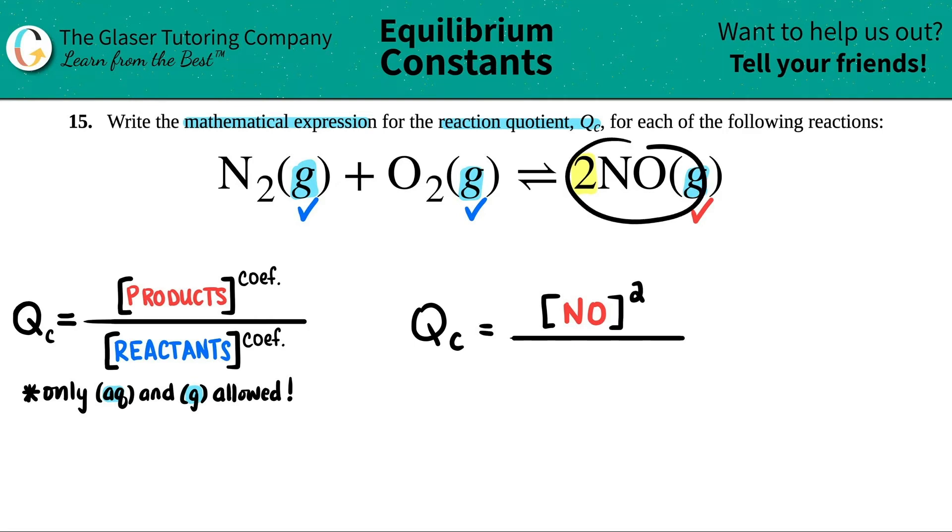And now that's my only product, so now I move on to the reactants. You could work from left to right. I got N2 and O2. They're both gases, so they have to be included. So I have the concentration, the brackets of N2. Close those brackets up. And since this is only to the first, there's no coefficient in the front, so I don't have to write that it's just to the first.